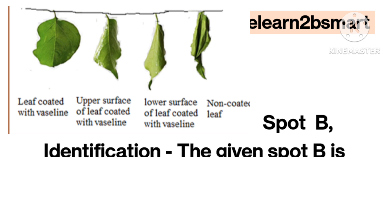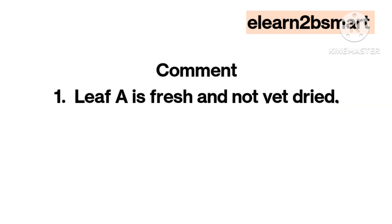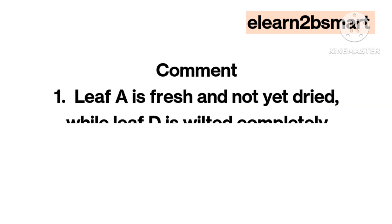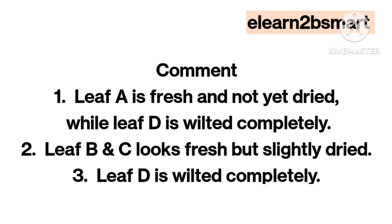Spot B. Identification: The given spot B is an experiment set up showing the rate of transpiration by fallen leaves. Comment 1: Leaf A is fresh and not yet dried, while leaf D is wilted. Leaf B and C look fresh but slightly dried. Leaf D is wilted completely.